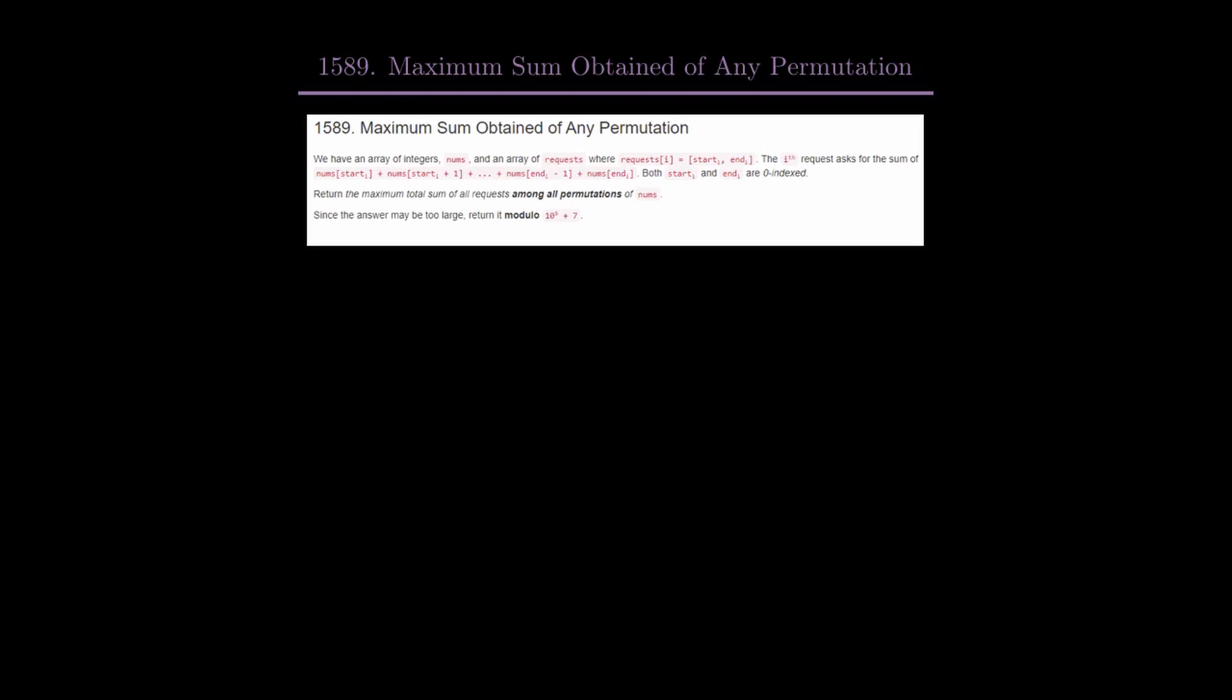Hello and welcome. Today we are solving Maximum Sum Obtained of Any Permutation from LeetCode Bi-weekly Contest 35. We are given an array of integers nums and an array of requests where requests[i] is (start_i, end_i).